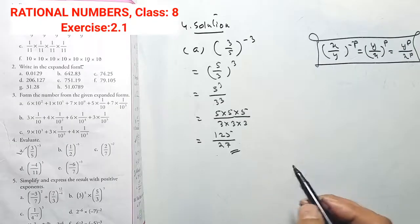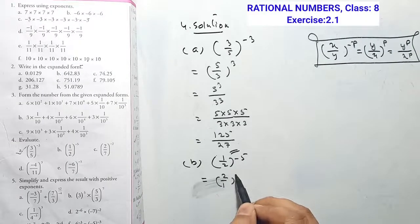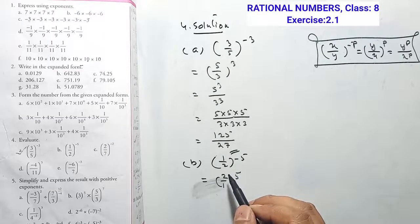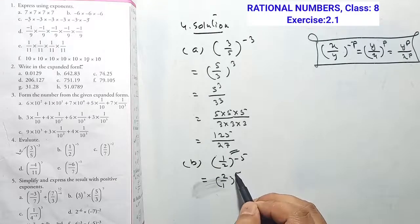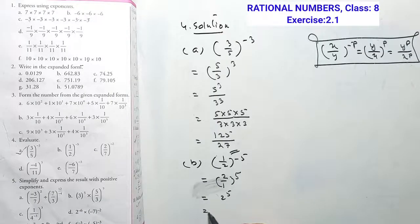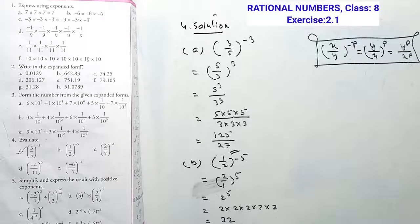For minus 2 over minus 5, writing (2/1) to the power 5 with positive sign: numerator becomes denominator and denominator becomes numerator. Then 2 power 5: 2×2=4, 4×2=8, 8×2=16, 16×2=32. So the answer is 32.